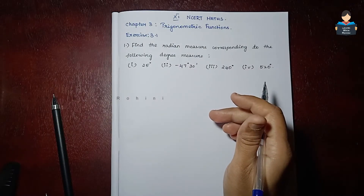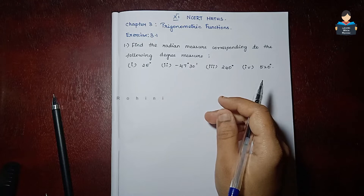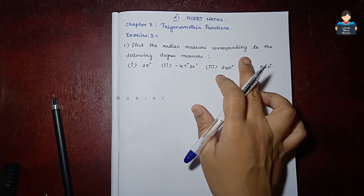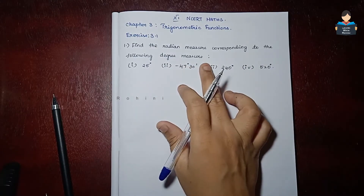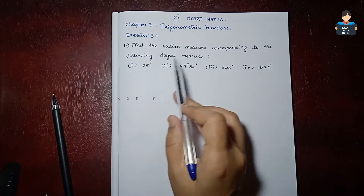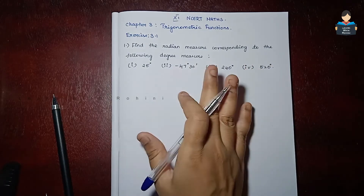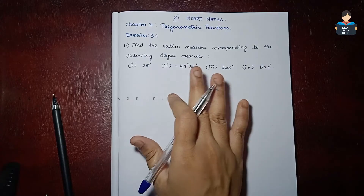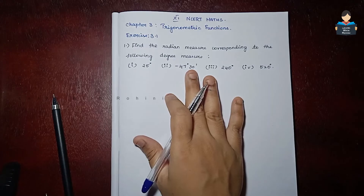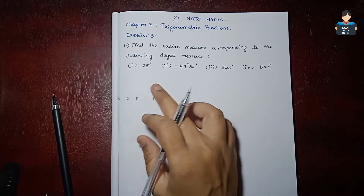Hello everyone, welcome to our channel. In this video, Chapter 3 Trigonometric Functions, Exercise 3.1, First Sum: Find the Radian Measure Corresponding to the Following Degree Measure. We will convert Degree Measure to Radian Measure. I will explain. Introduction video link is in the description. Check the first subdivision.